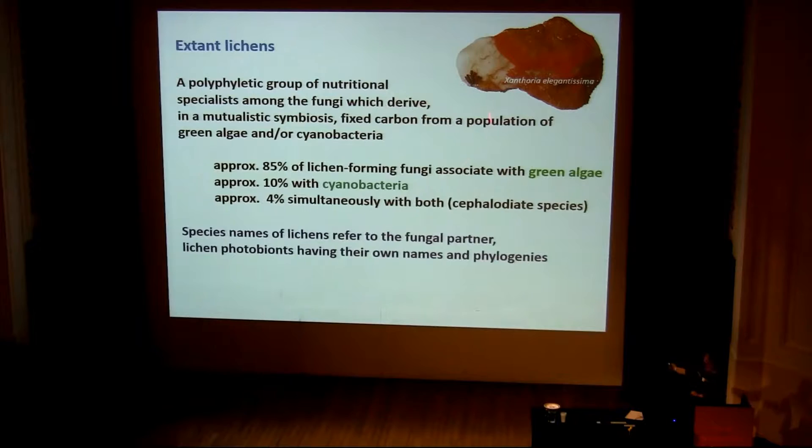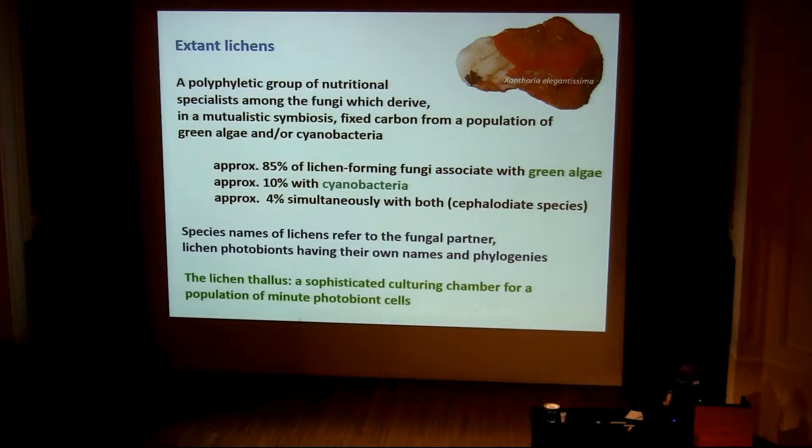The species names of lichens — for example, this elegant Xanthoria elegantissima from the Namib Desert — refer to the fungal partner. The lichen photobionts have their own names and phylogenies, and you can regard the lichen thallus as a very elegant and very sophisticated culturing chamber for a population of photo-autotrophic partners.